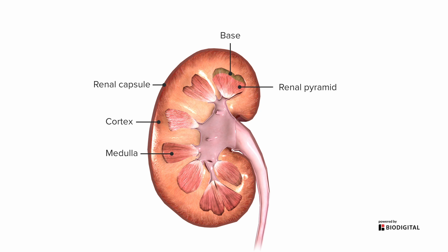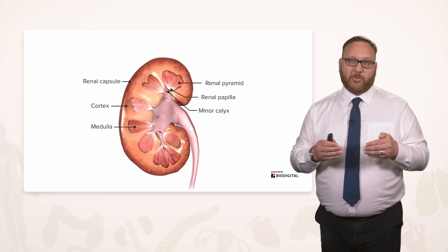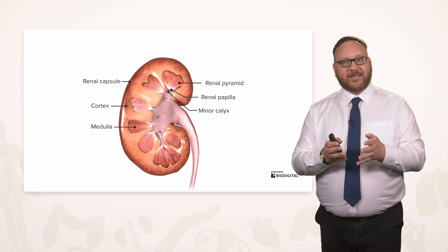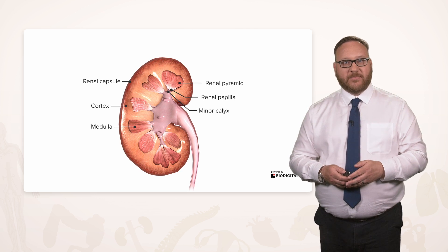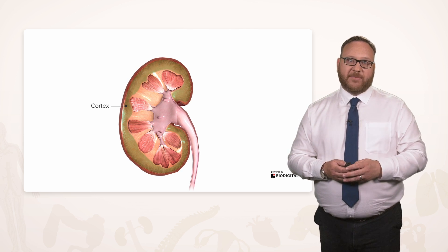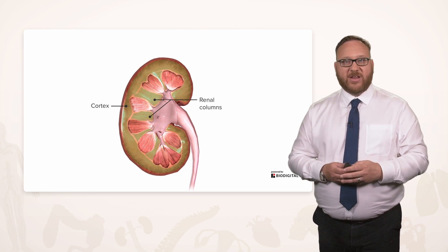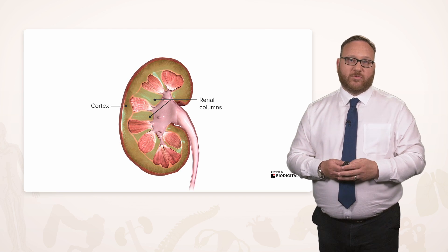The renal pyramid has a broad flat base and an apex. At the apex there is an opening called the renal papilla, where urine passes into what are known as minor calyces. Each renal pyramid gives rise to a renal papilla where urine enters its minor calyx. The cortex surrounds the kidney just deep to the fibrous layer, and part of that cortex actually passes between the renal pyramids — these are known as renal columns.